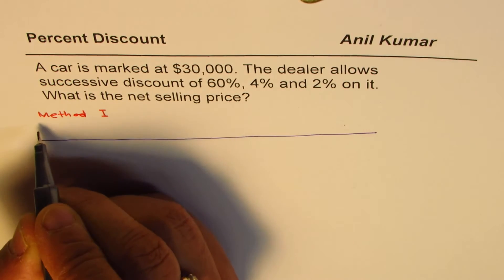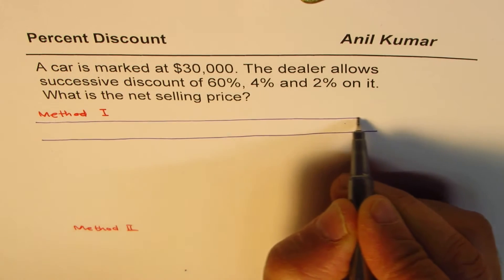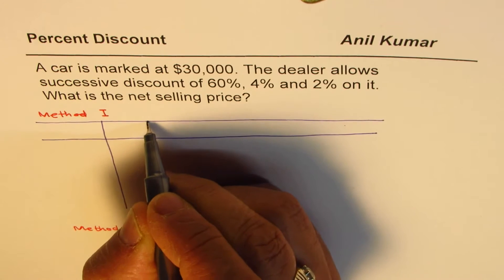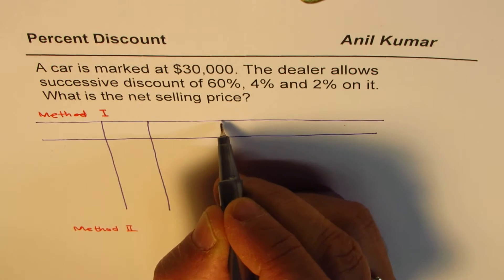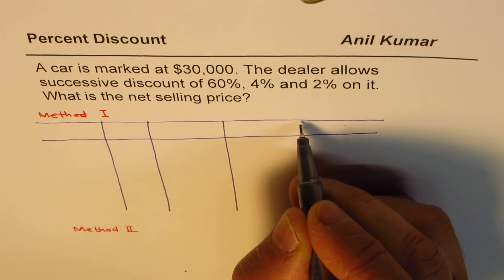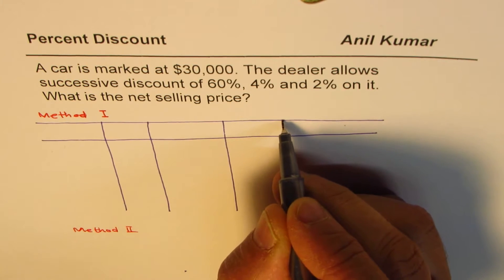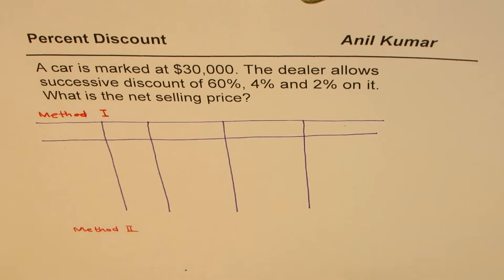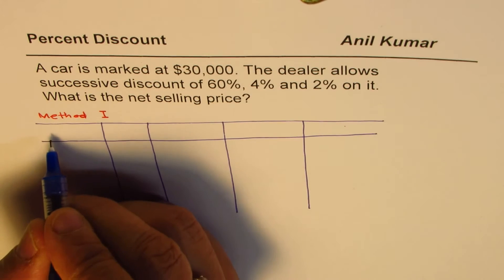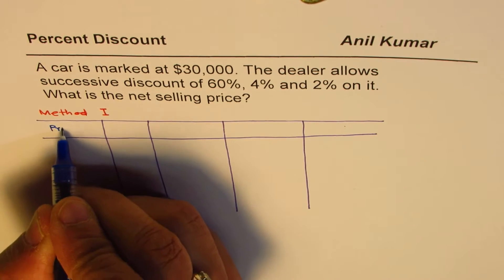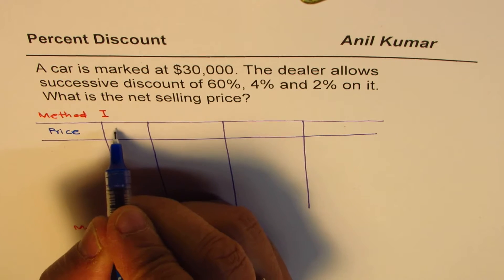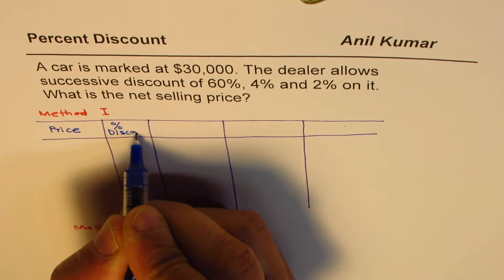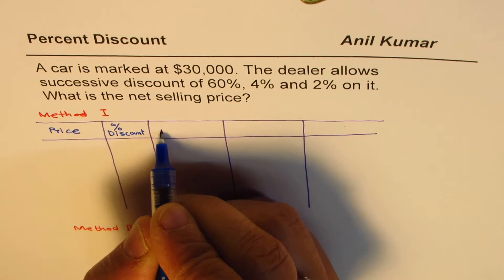Let's take some minutes to solve first. What is normally done is you make a table. In this table you write the amounts, percentage discount, then discount, and then the net price. That is how we will do it. Here we have the original price, then we're talking about percent discount, and here we'll talk about discount.